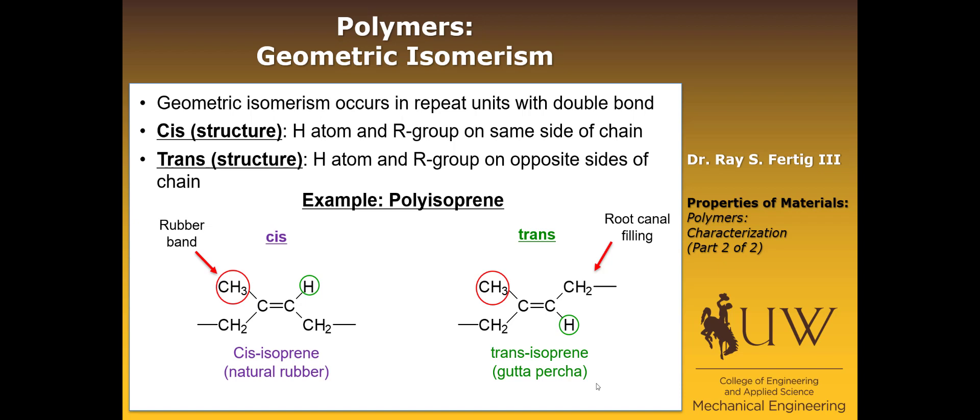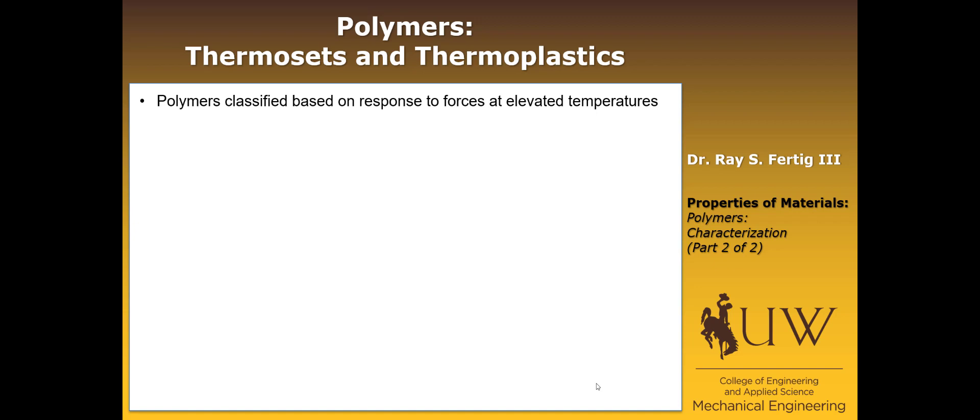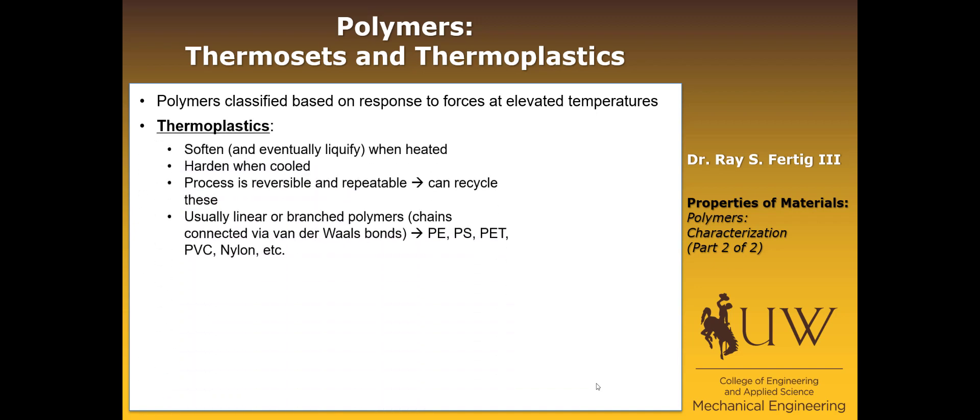Okay, so that ends the discussion of how molecular structure characterization breaks down for polymers. We want to move now to talk about other types of characterizations, so we can classify polymers also on the basis of how they respond to force at elevated temperatures. And so we break these into what are called thermosets and thermoplastics.